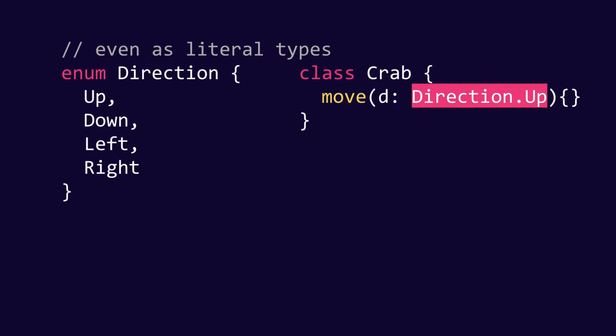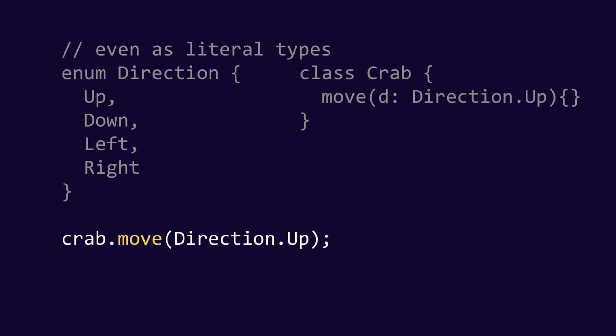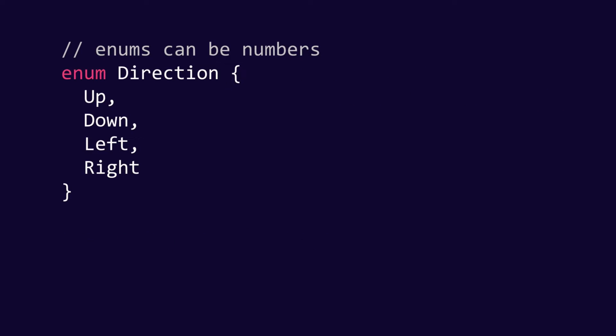Cool fact about enums: you can also use them as literal types. So we don't need to use only Direction. We can also use Direction.Up to use the literal type enum Direction.Up. So in this case now we would only ever be able to use that type, because otherwise we get a type error.